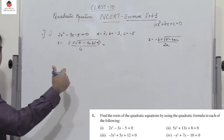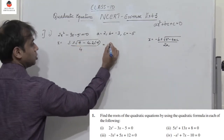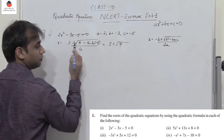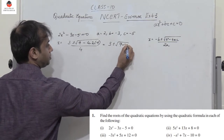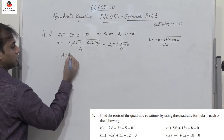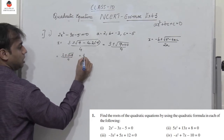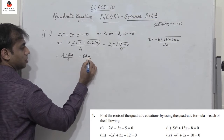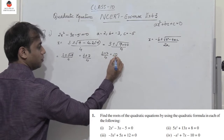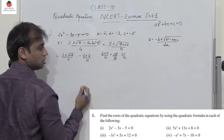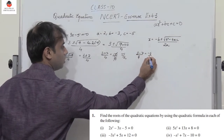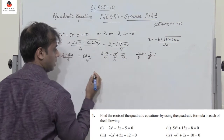Simplifying: 3 plus or minus root of 9 plus 40, which gives root of 49, so 3 plus or minus 7, all divided by 4. The two roots are: 3 plus 7 by 4, which is 10 by 4 or 5 by 2, and 3 minus 7 by 4, which is minus 4 by 4 equals minus 1. So the roots are 5/2 and minus 1.